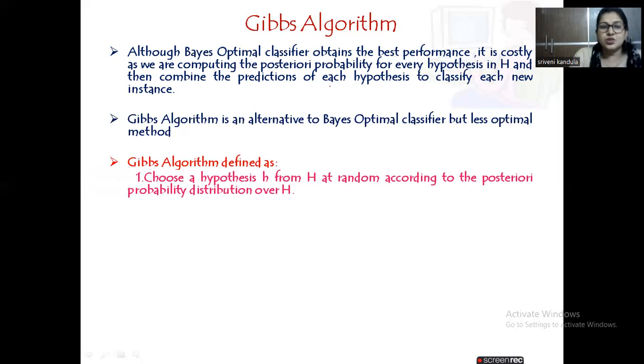The Gibbs algorithm can be defined as: choose a hypothesis h from a set of hypotheses H at random according to the posterior probability distribution over the set of hypotheses H. Then use this h to predict the classification of the next instance.